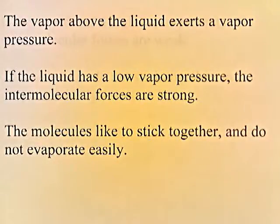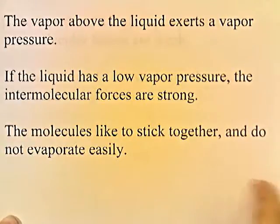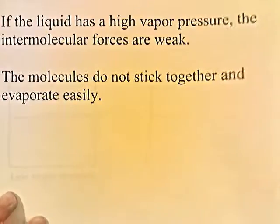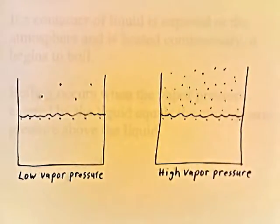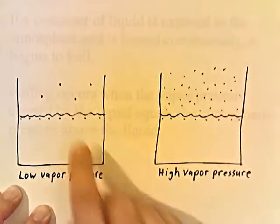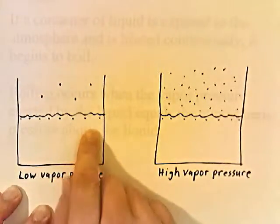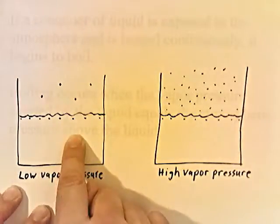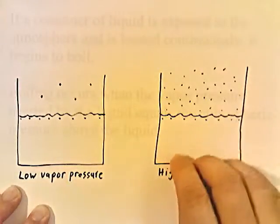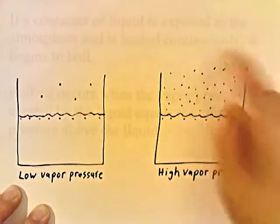The vapor above the liquid exerts a vapor pressure. If the liquid has low vapor pressure, the intermolecular forces are strong and the molecules stick together, so they don't evaporate easily. If the liquid has high vapor pressure, the intermolecular forces are weak and the molecules do not stick together, so they evaporate easily. A liquid with low vapor pressure has strong intermolecular forces; a liquid with high vapor pressure has weak intermolecular forces and many vapor molecules above the surface.